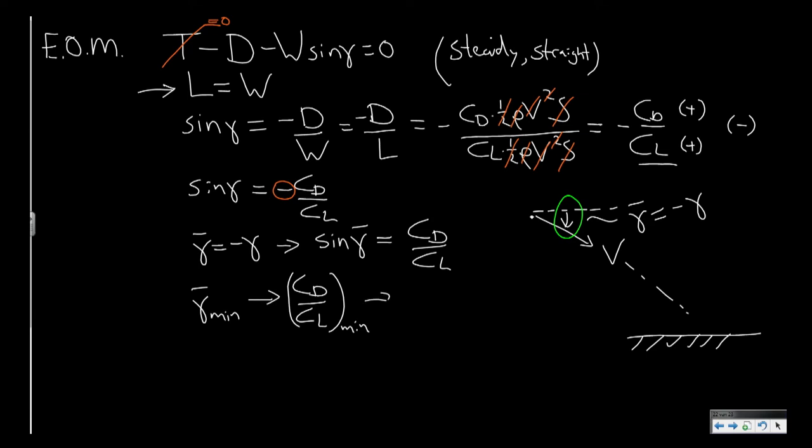then we should fly at the condition for minimum CD over CL. And this is in fact the same as stating that CL over CD should be maximum.